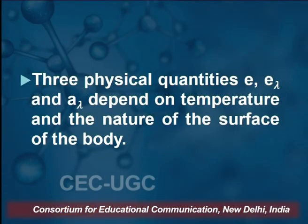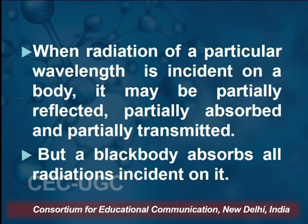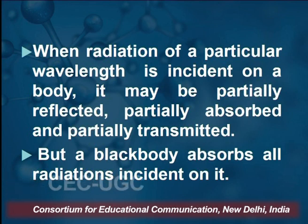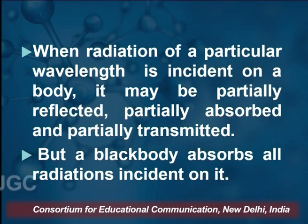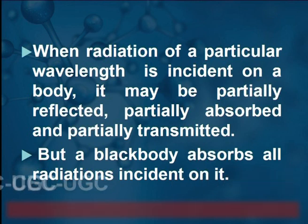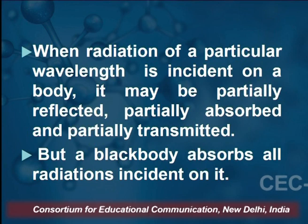The three physical quantities E, E_λ, and A_λ depend upon the temperature and the nature of the surface of the body. When radiation of a particular wavelength is incident on a body, three phenomena are possible: the radiation can be totally reflected, totally absorbed, or totally transmitted. Alternatively, it can be partially reflected, partially absorbed, and partially transmitted. All three may occur independently, together, or in any combination.